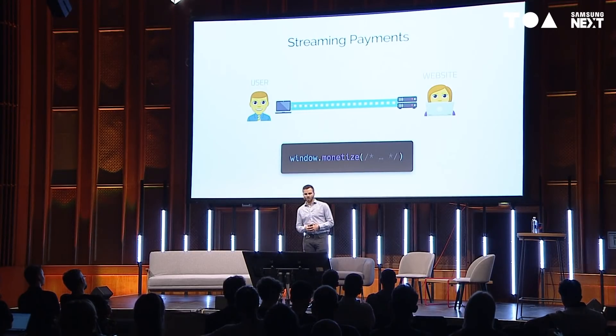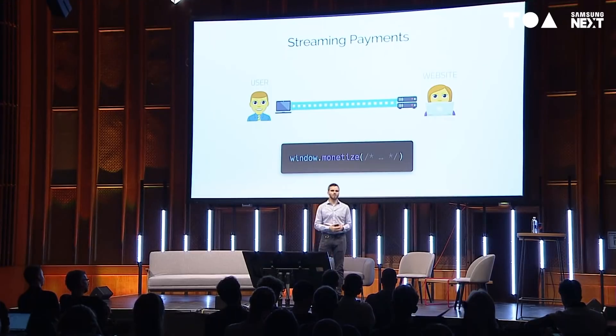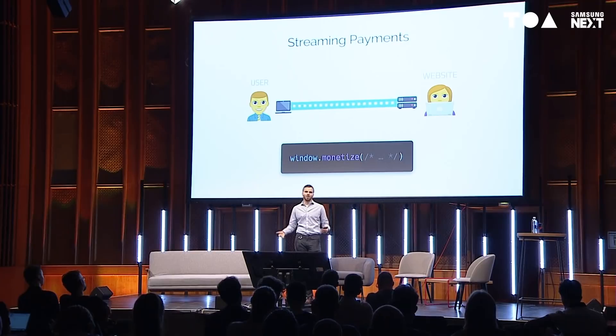You can imagine streaming payments flowing from you to websites as you browse — all happening in the background. The way it's actually implemented is a browser API called `window.monetize`. The website calls that API, and the browser gives it something similar to a WebSocket, except it's a payment-enabled socket. The website can then connect to itself or whoever it needs to pay using that API, and can use paid endpoints on the web. The amount the website can spend is limited by time: the longer you spend on the site, the more it can charge. In the future this could be more intelligent, but it's a good place to start.